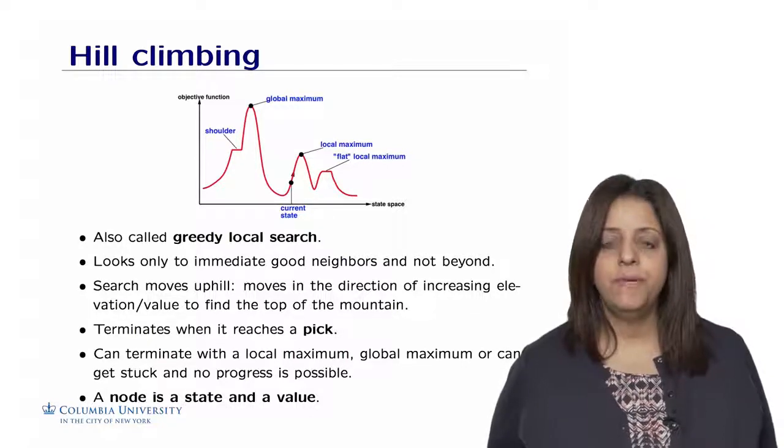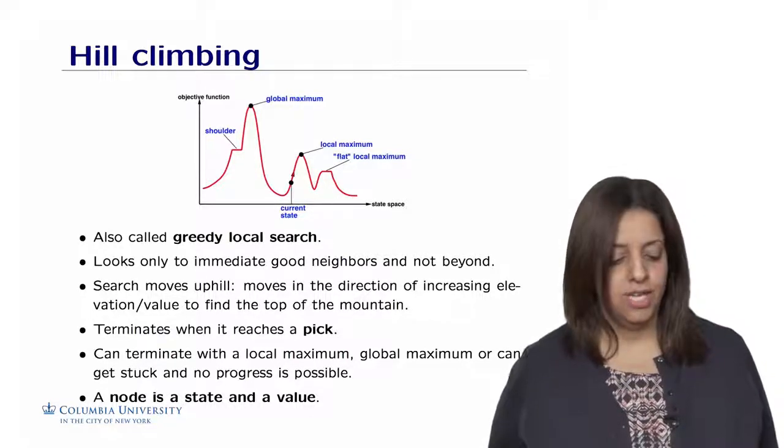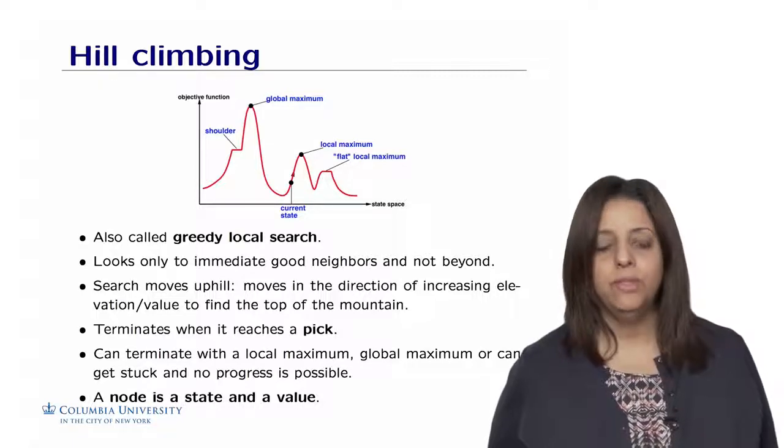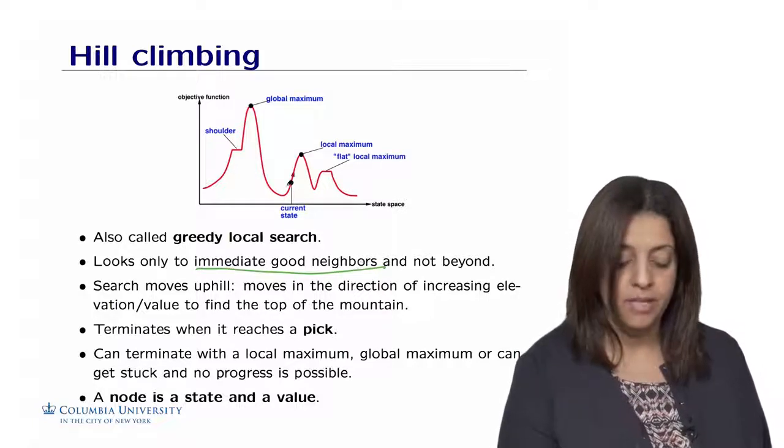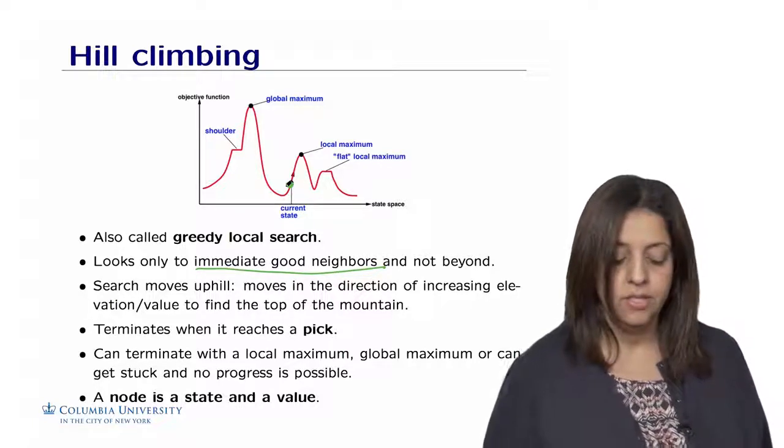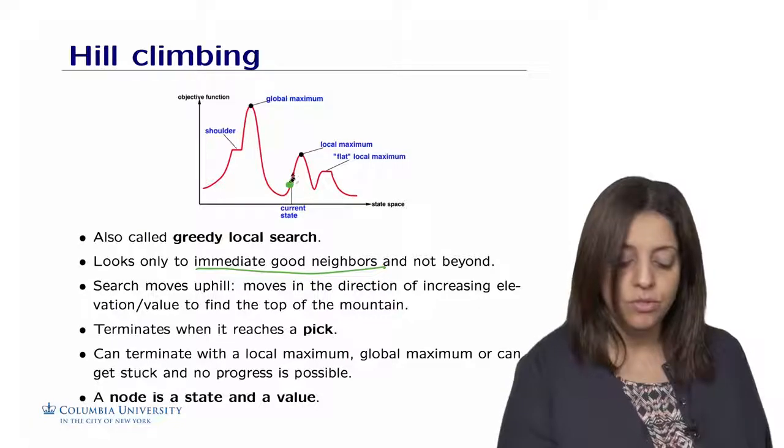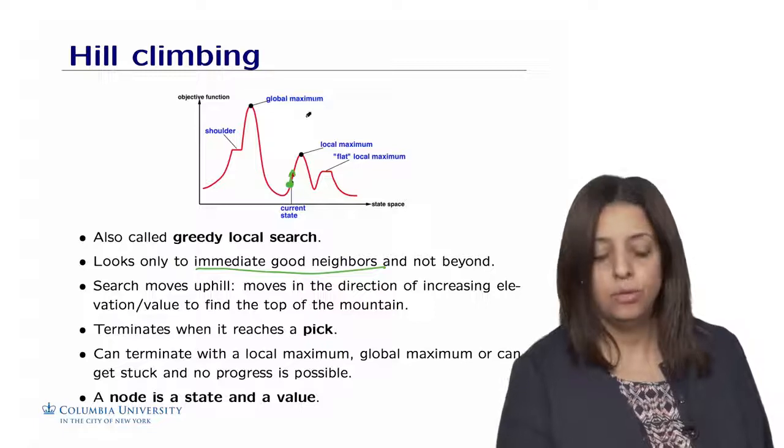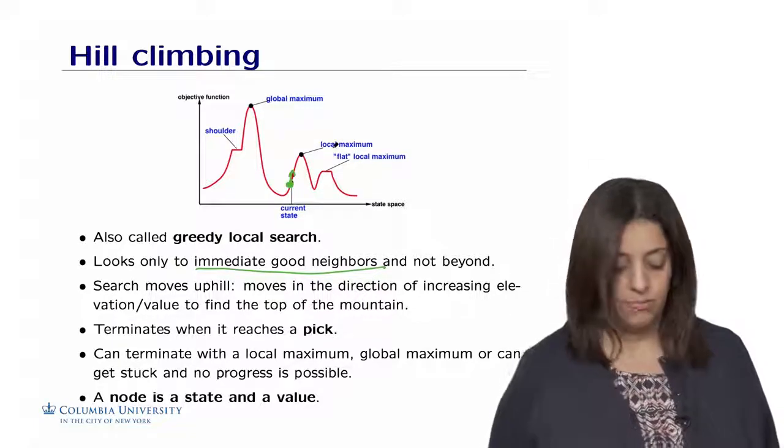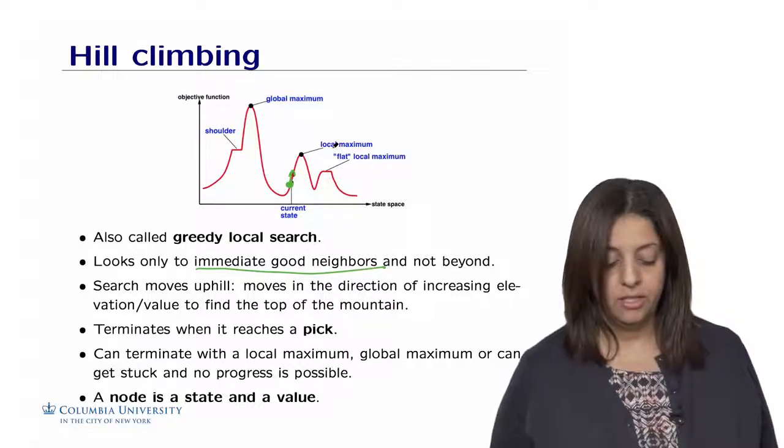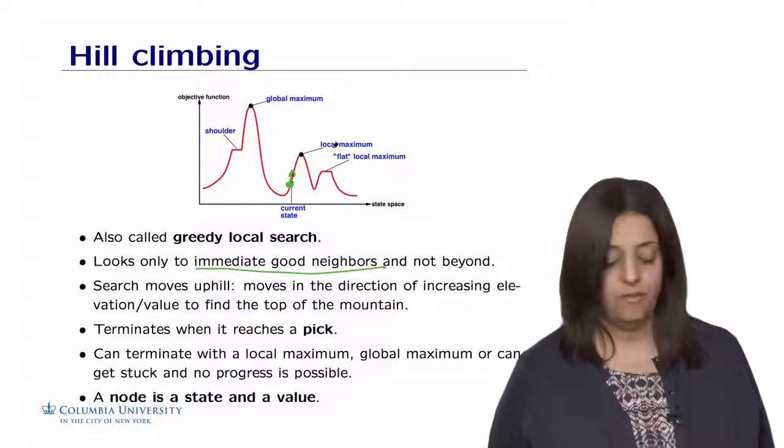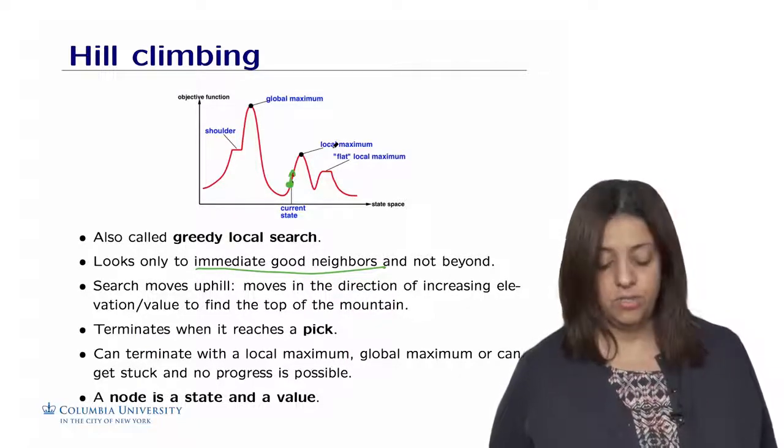Hill climbing constitutes the most basic methods for local search. It's also called greedy local search because it looks only to the immediate good neighbors and not beyond. So imagine we are in this node here, in the current state. We're going to look only to the neighbors of this node and try to go uphill to reach preferably a global maximum, but if not a local maximum. So the search moves uphill, which moves the direction of the increasing element value to find the top of the mountain.